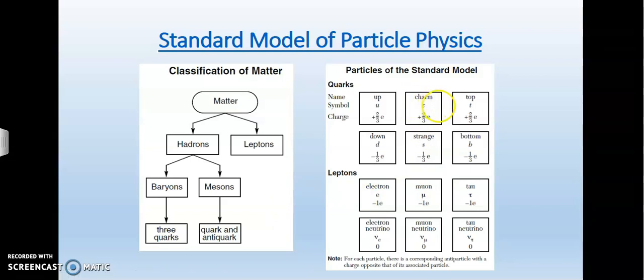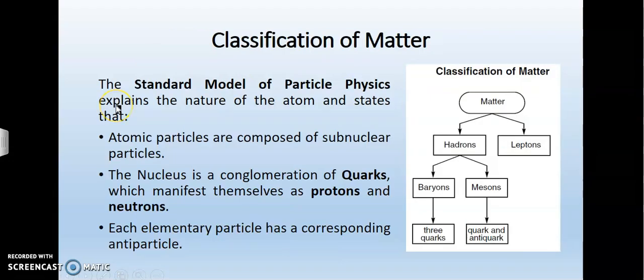The Standard Model of particle physics explains the nature of the atom and states that atomic particles are composed of sub-nuclear particles. As we mentioned before, the nucleus is a conglomeration of quarks which manifest themselves as protons and neutrons. We're going to explain how the neutron comes to exist and what its function is inside the nucleus. Each elementary particle has a corresponding antiparticle. An antiparticle and a particle annihilate each other and turn back into light when they come into contact.